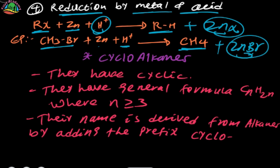These four methods are used for the preparation of alkynes. This is the first method of organic chemistry — alkynes. Alkynes follow a cyclic pattern.